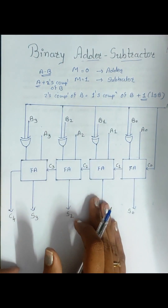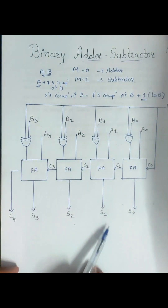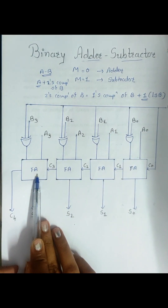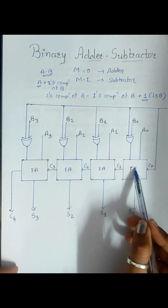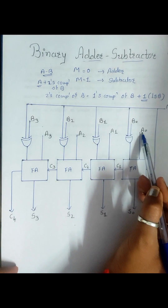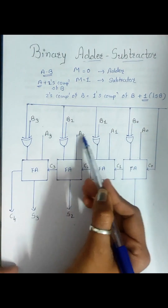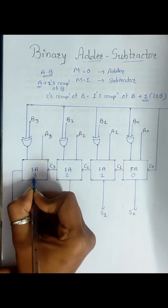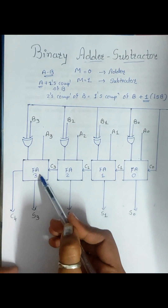Now, this combination circuit will work as both an adder and a subtractor. Here we are using full adders — the same as we used in the binary adder — making this a 4-bit binary adder as well as subtractor. Each full adder has 3 inputs: A0, A1, A2, A3 for the 0th, 1st, 2nd, and 3rd bits.